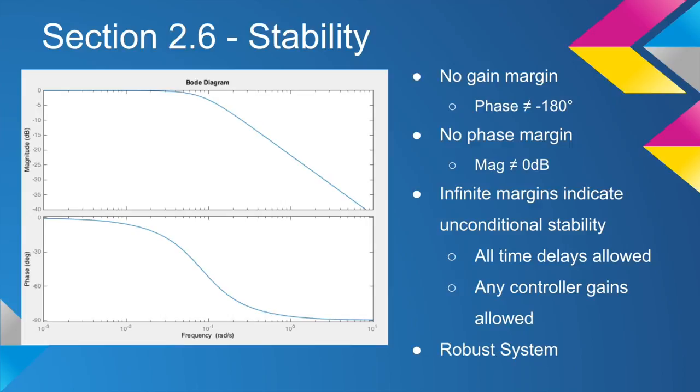This is actually great because it means there is no time delay that will cause the system to go unstable, and there are no K values that will cause the system to go unstable. For these reasons, the controller and system are very robust.